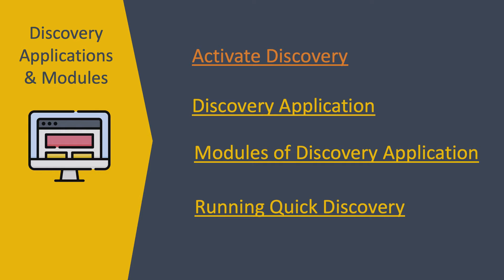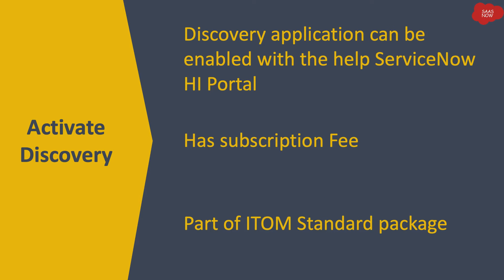To implement and use Discovery in your organization, the first step is activating the Discovery application in your ServiceNow instance. The Discovery application can be enabled from the ServiceNow HI portal — there is a plugin for Discovery, but it can only be enabled with the help of ServiceNow. You need to raise a request on the HI portal, and once the request is approved, you will see the Discovery application installed in your instance.